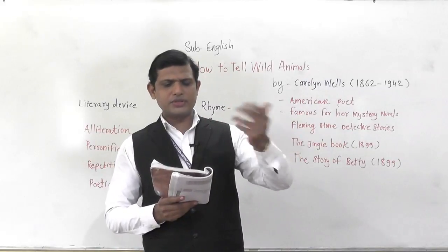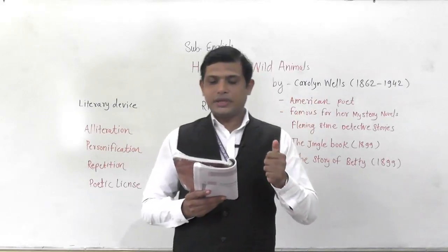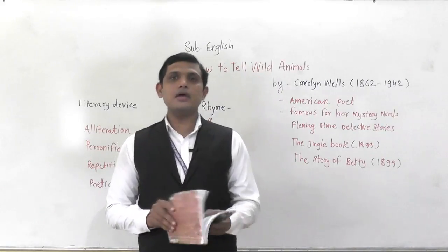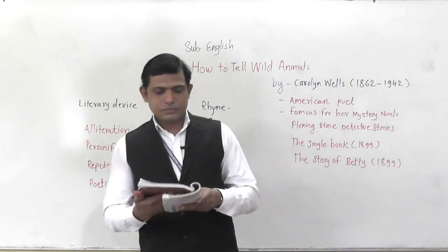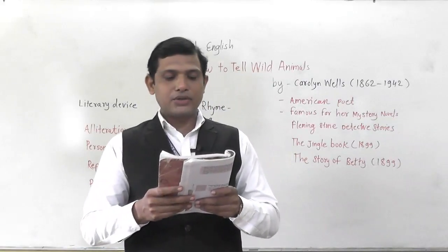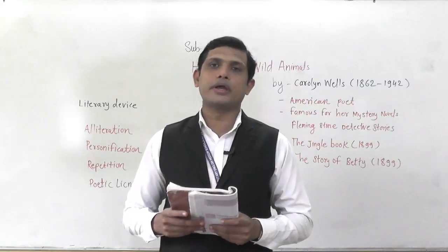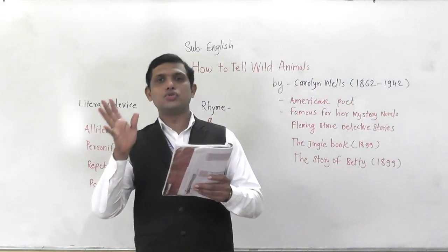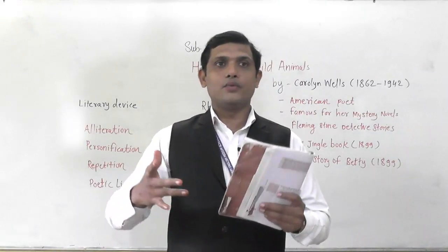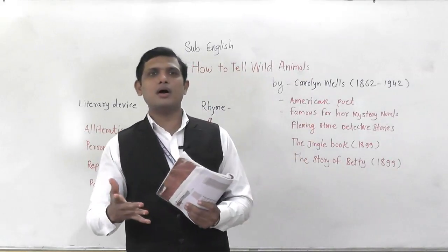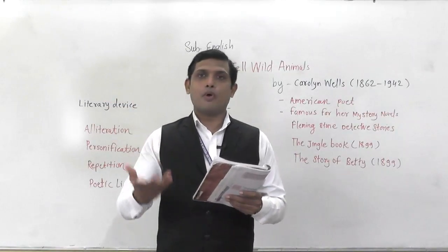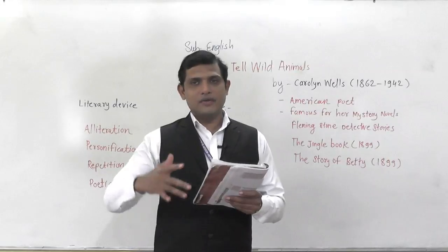In the first stanza, the poetess says: suppose you are roaming somewhere in the jungle towards the east direction, and a large tawny beast advances towards you — meaning attacking towards you — and he roars at you so loudly that you feel like you are going to die from the roar alone. Then you must know he is an Asian lion. So by the roar and the large brown appearance we can identify the Asian lion.